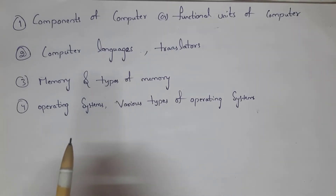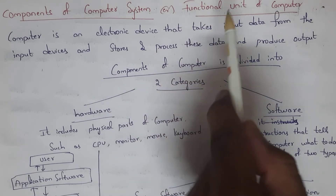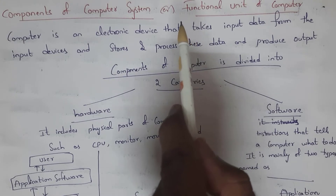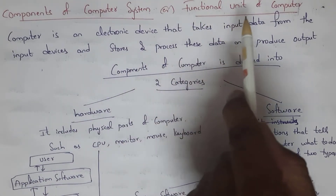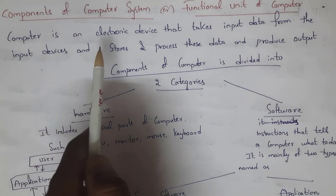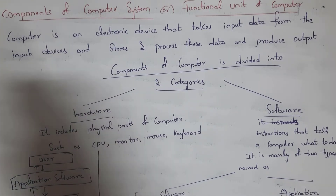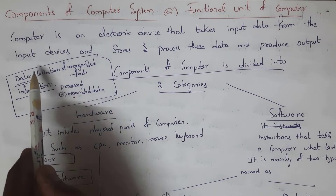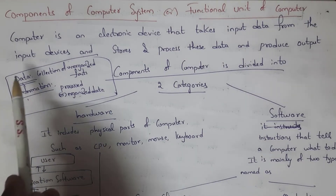Let's get started. First I will explain components of computer, which we also call functional units of computer. A computer is an electronic device that takes input data from input devices, stores and processes data, and produces output. For example, a keyboard is an input device, and output is seen on output devices like a monitor. You need to know the difference between data and information — data is a collection of unorganized facts, while information means processed or organized data.